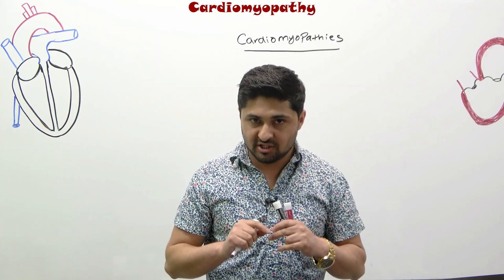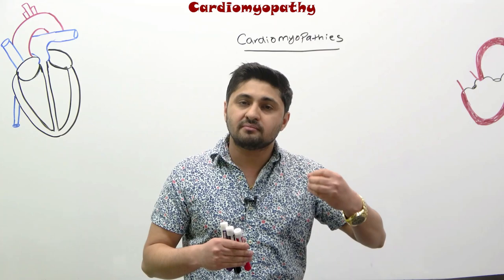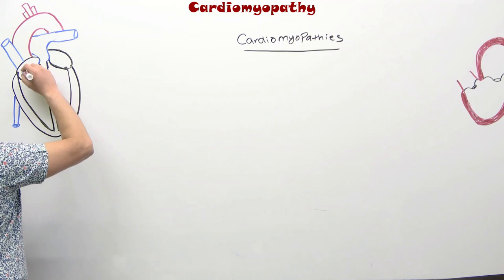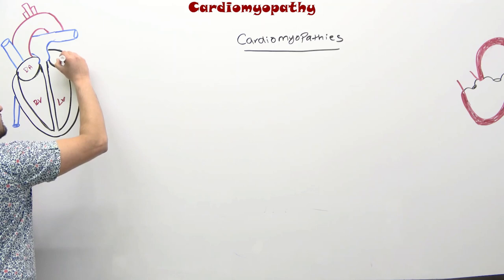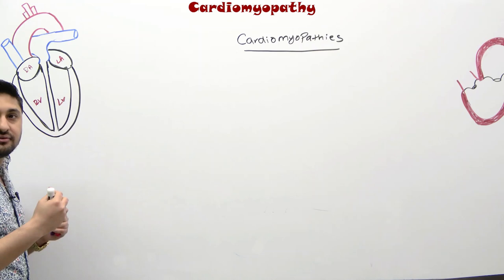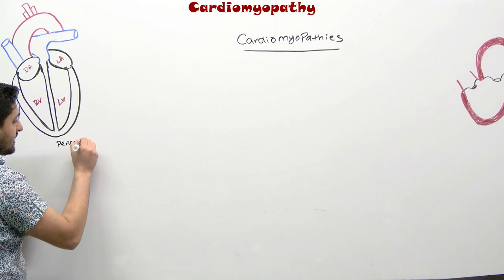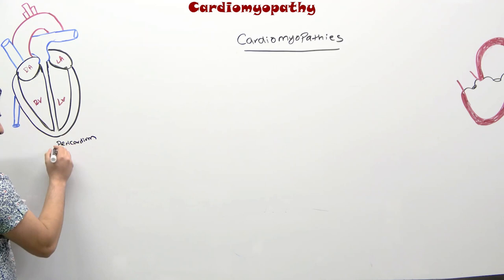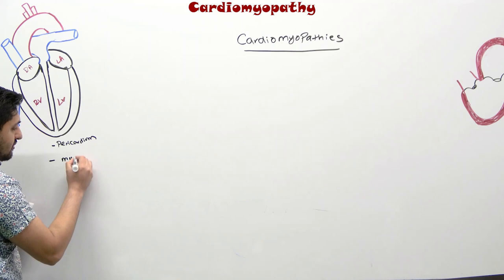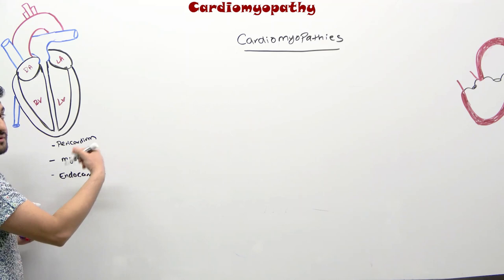That is not quite the contemporary or modern definition. The modern definition requires some anatomical context. Looking at the heart, you have the right atrium, right ventricle, left ventricle, and left atrium. From normal anatomy, you know the heart has different layers: the outermost is the pericardium, then the myocardium, and then the endocardium.